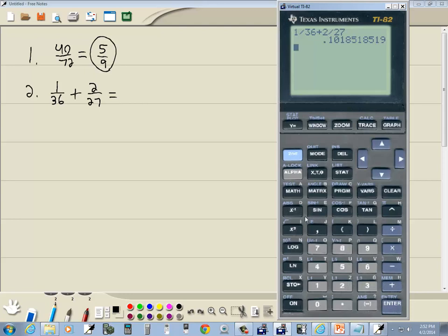Enter, and you get a decimal. And to change decimal to fraction, again we do math, enter, enter. And that gives us 11 over 108.